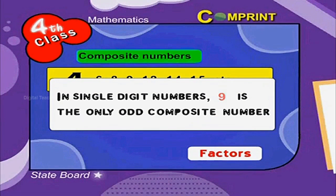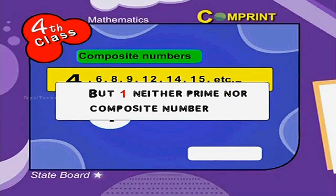In single digit numbers, 9 is the only odd composite number. But 1 is neither prime nor composite number.